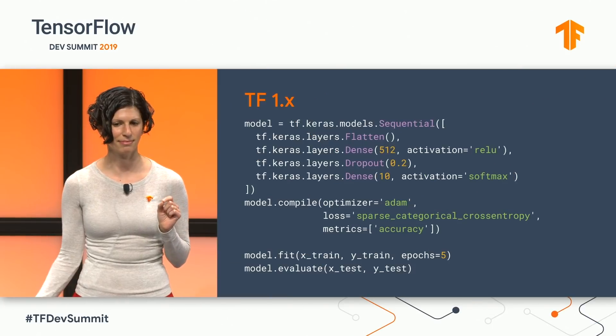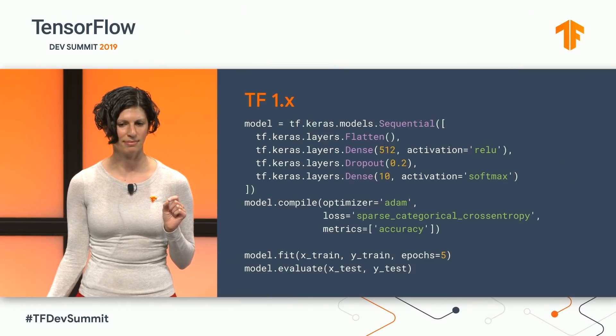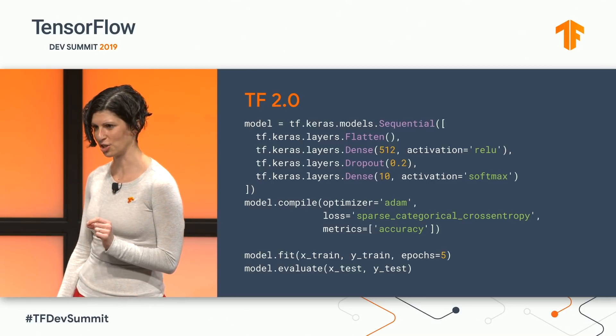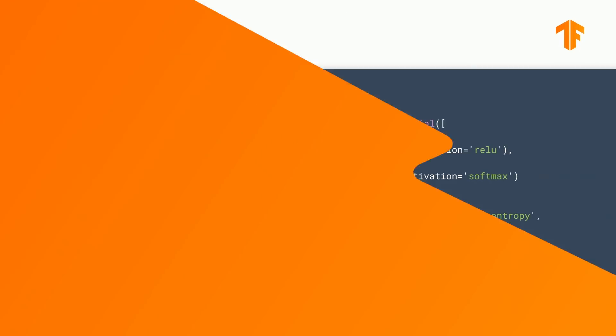That's really interesting — bringing the scale of Estimator into Keras. I know there's going to be tons of questions about that. One of the things I thought was really interesting was that you had this slide where there was a spot the difference — you had training a DNN in Fashion MNIST in 1.13, and then in 2.0, and there was no difference between them. So what's the real message behind that?